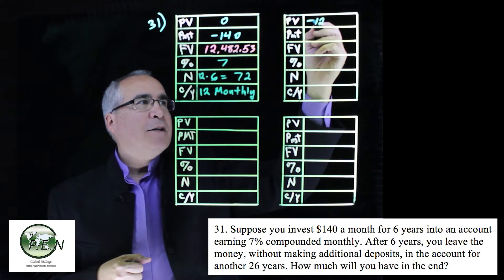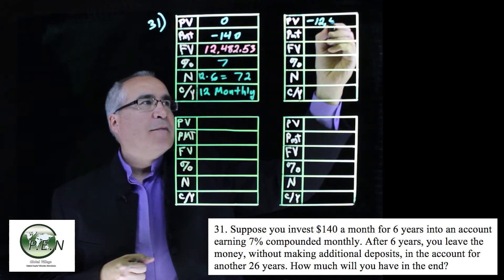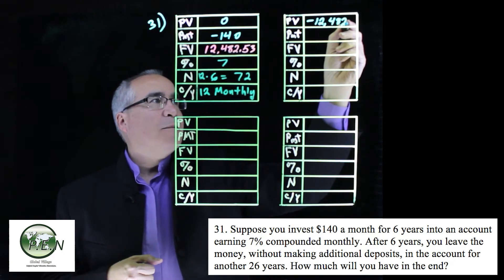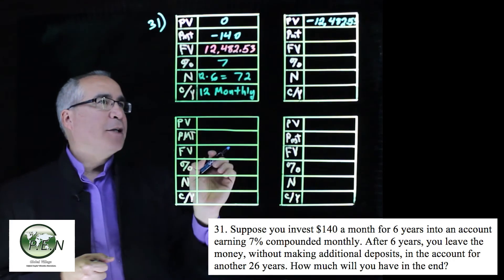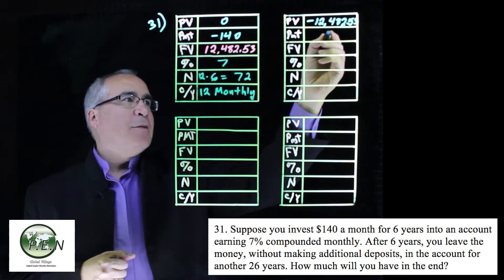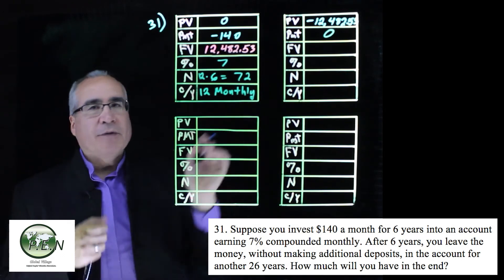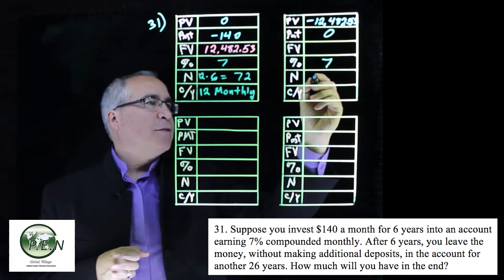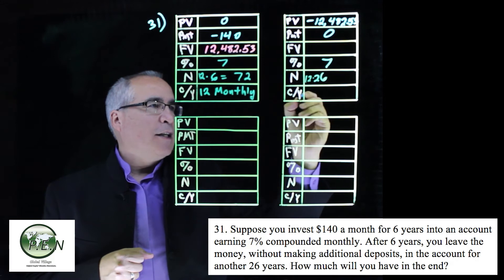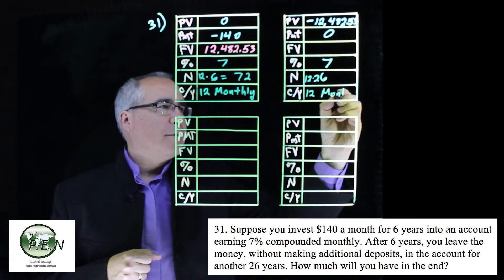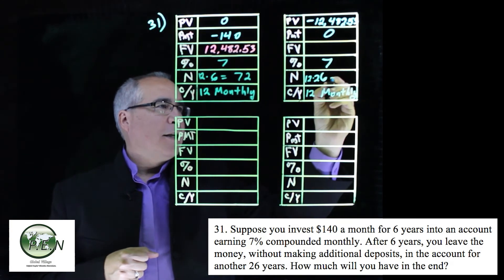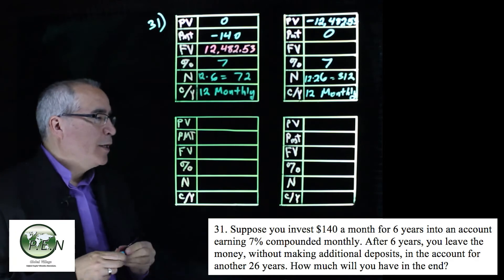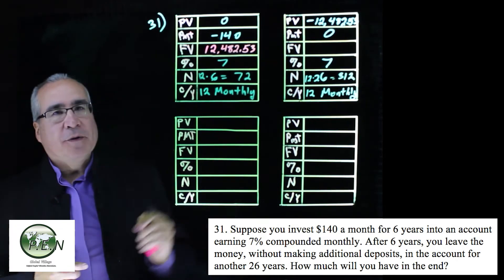So we move that to the present value. We're not going to make any more payments, so that becomes zero. Future value is what we're going to calculate. We're still getting 7%, and this time we're going to leave it in for 26 years. Everything is getting compounded monthly, so that gives us 312 periods.